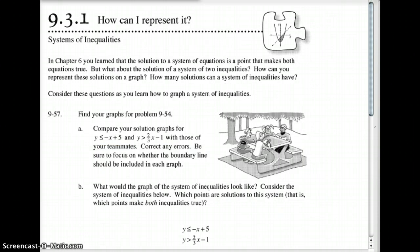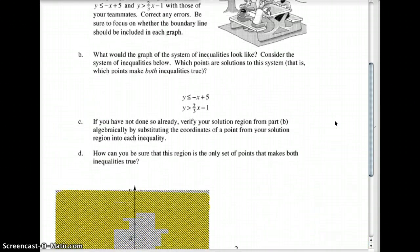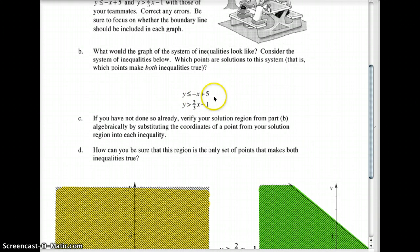Let's get started with our first one. Here is our system of inequalities where y is less than or equal to negative x plus 5 and y is greater than two-thirds x minus 1. If you remember back from chapter 7, you learned how to graph each of these linear equations. So let's do that.